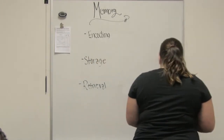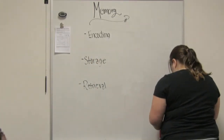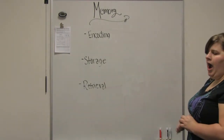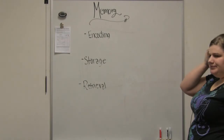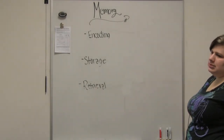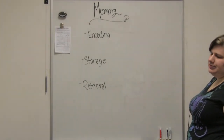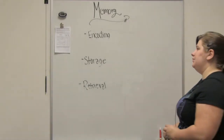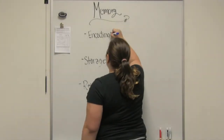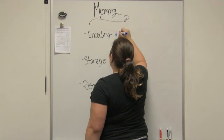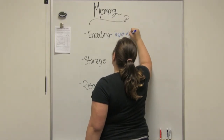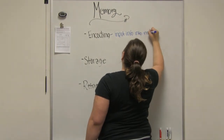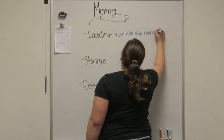What happens in encoding? Encoding is having a memory — it's that process where we transform what we feel, what we think, into a memory, like a long-term memory. So, we input info into our memory. Perfect.